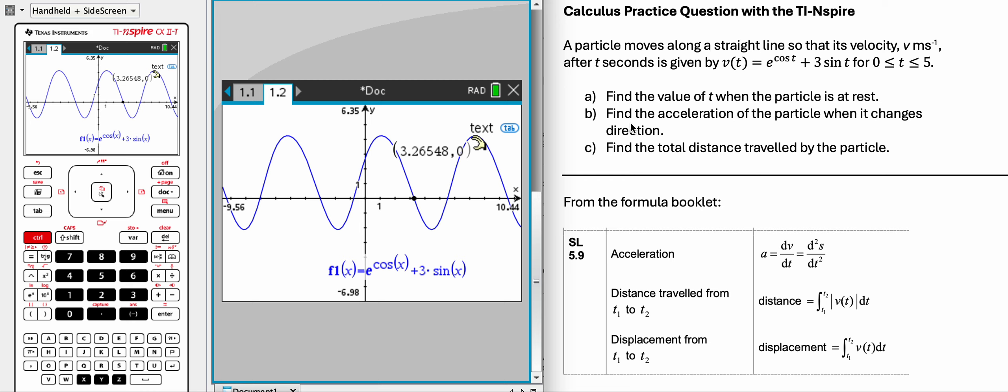So you just have to notice that it changes direction when the velocity changes from positive to negative, or from negative to positive, so it goes from left to right, or from right to left, because it's on a straight line. So it's right at this point.